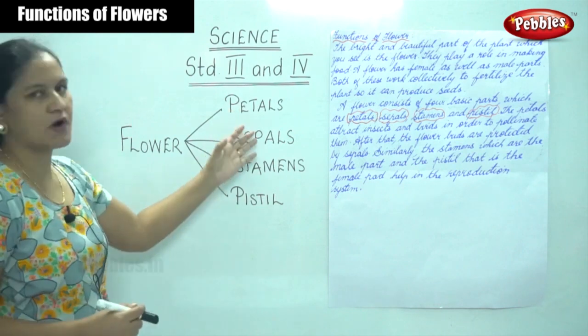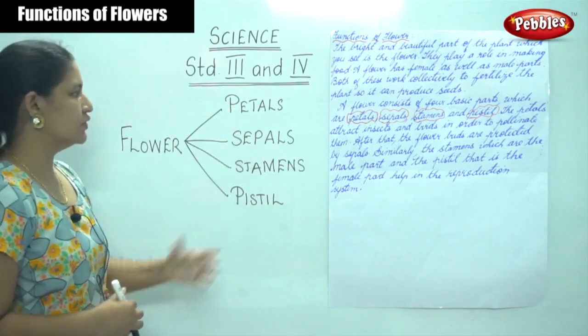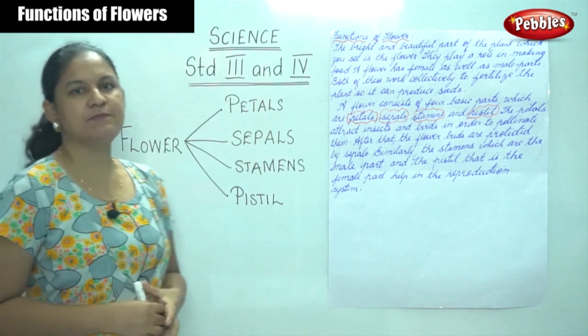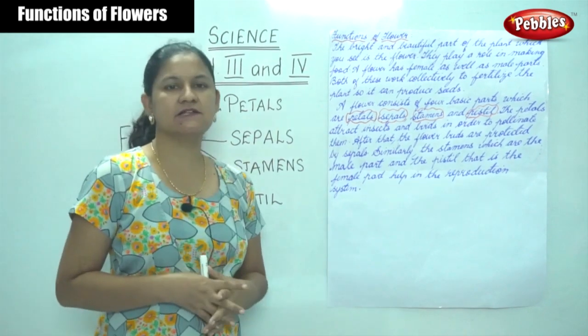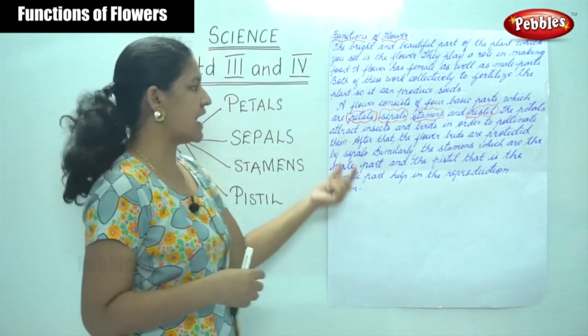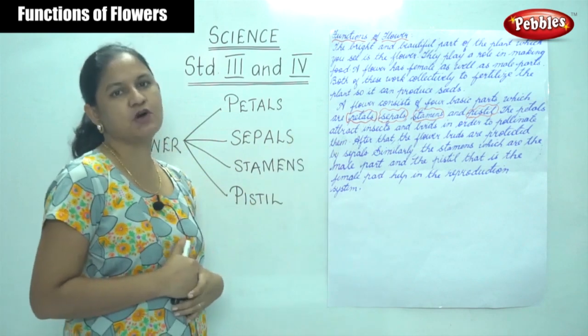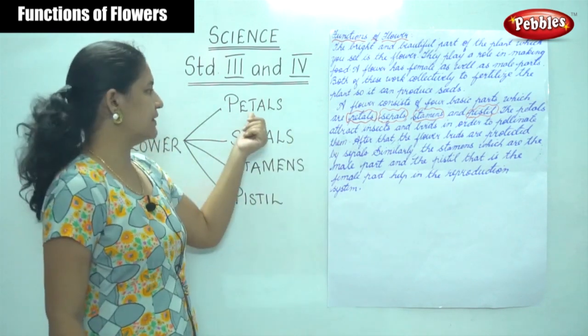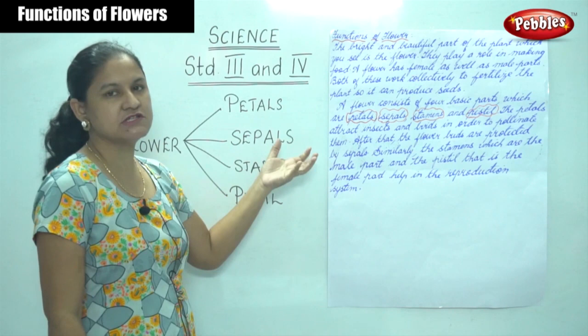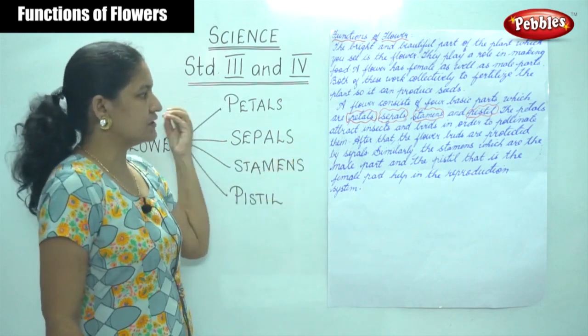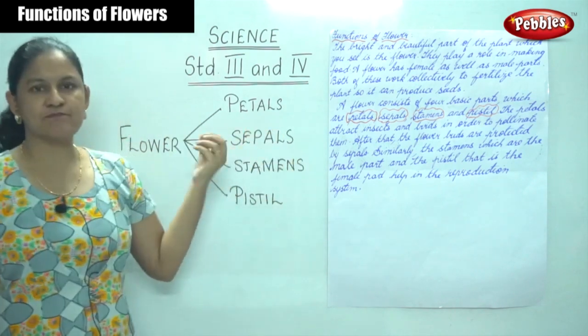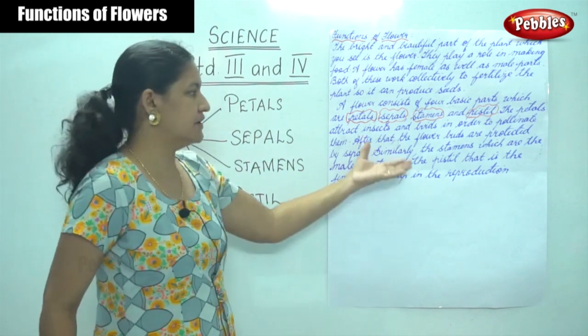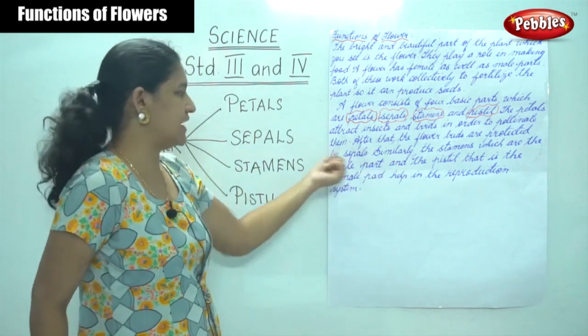The petals are the most important part of the plant that attracts insects and birds in order to pollinate them.